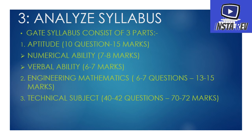The third point is to analyze the syllabus. GATE syllabus consists of three parts: first, aptitude; second, engineering mathematics; and third, technical subject. In aptitude, 10 questions are asked with a weightage of 15 marks, covering numerical ability (7–8 marks) and verbal ability (6–7 marks). In engineering mathematics, 6–7 questions are asked with a weightage of 13–15 marks. Aptitude and engineering mathematics are the most important subjects — they determine your rank. Cracking GATE is easy, but cracking a good rank is tough. If you want to get into a PSU or IIT, you must study these subjects in a very smart way.